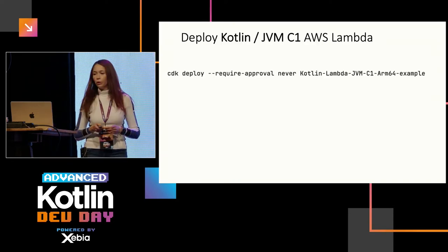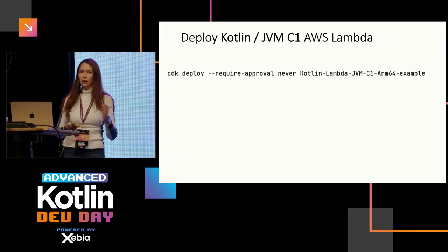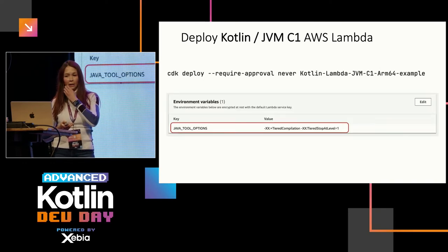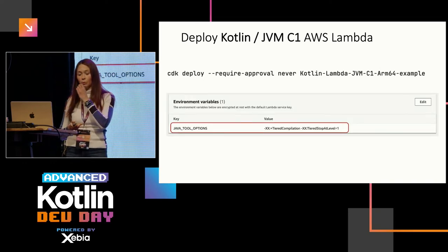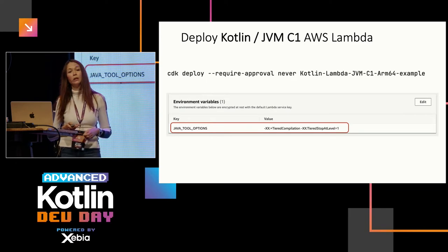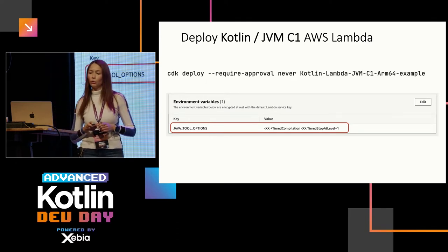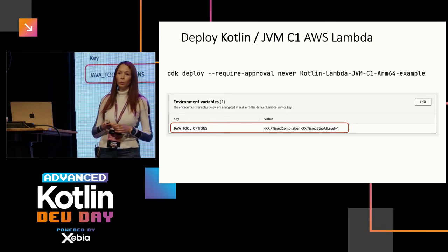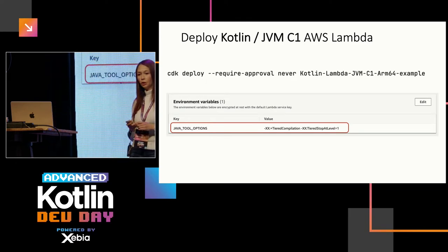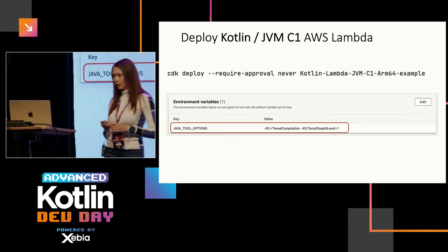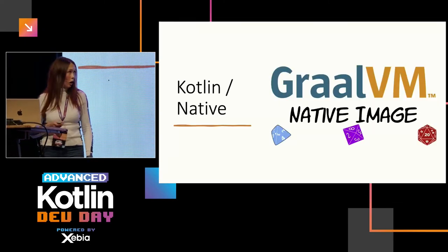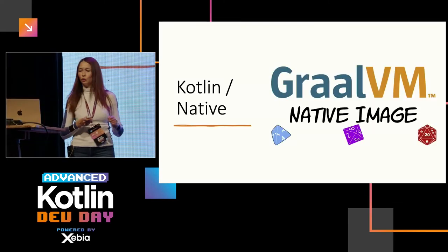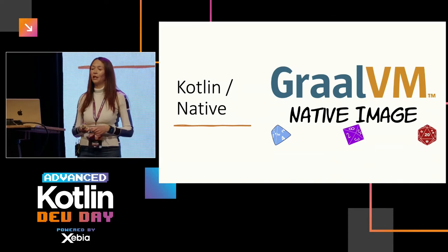We deploy again with a different Lambda name, and we can see in the console that the environment variable is set. When we execute, we also see in the logs that the setting has been picked up. Now let's go native.